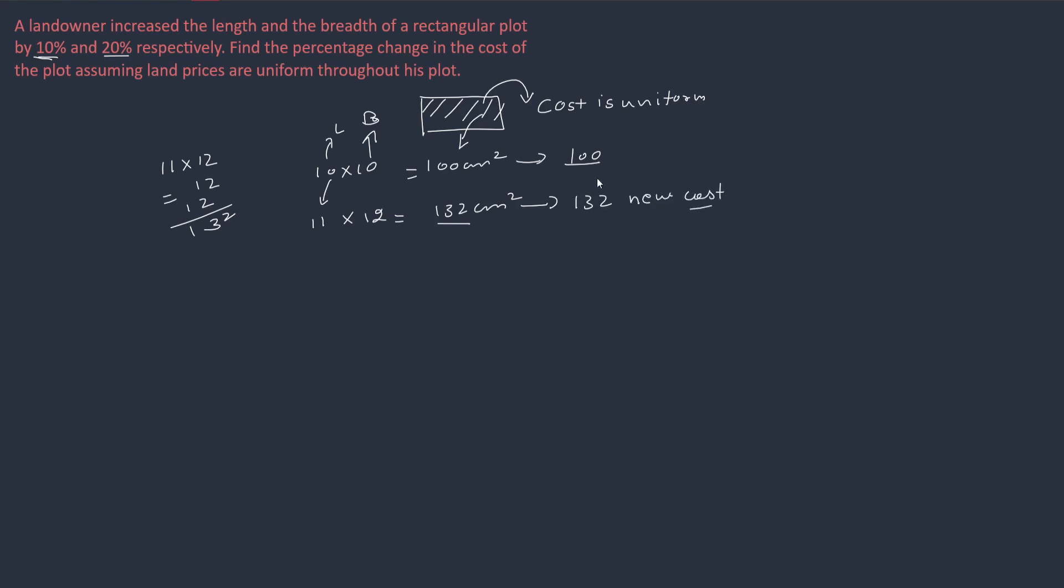Now, what they have asked: find the percentage change in the cost of the plot. So we have to find percentage change with respect to this. We can clearly see increased price is 32, and from which we have to see the price has been increased from 100 into 100. This would be equal to 32%. So the right answer is 32%.